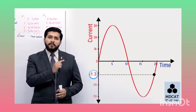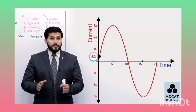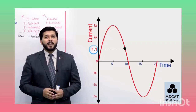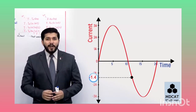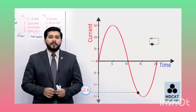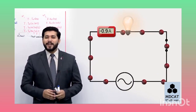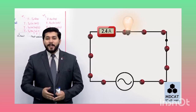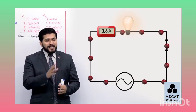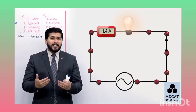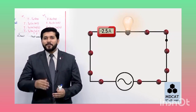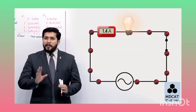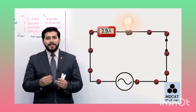اس پورے cycle میں ہر لمحہ current change ہو رہا ہے۔ اگر meter instantaneous value بتائے تو meter پر values اتنی تیزی سے fluctuate ہوں گی کہ آپ کو کچھ پتہ نہیں لگے گا - کیا چل رہا ہے circuit میں۔ یعنی ہمیں ایسا meter ہرگز نہیں چاہیے جو instantaneous value بتائے - یہ ہمارے کام کا نہیں۔